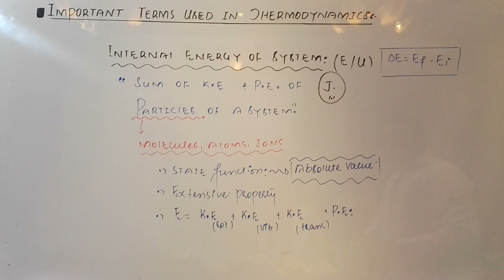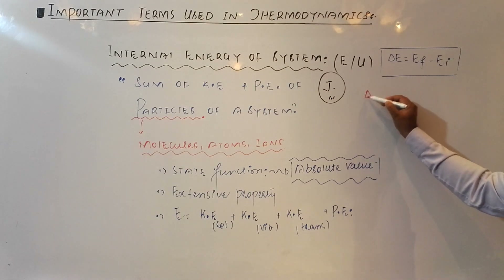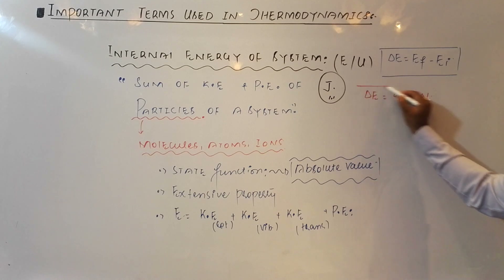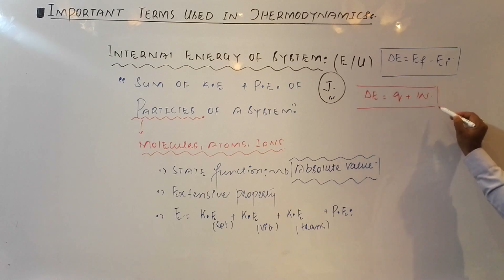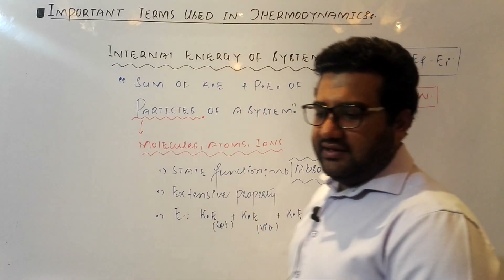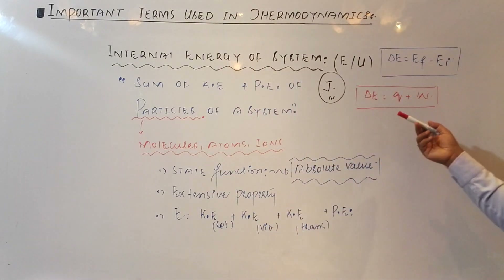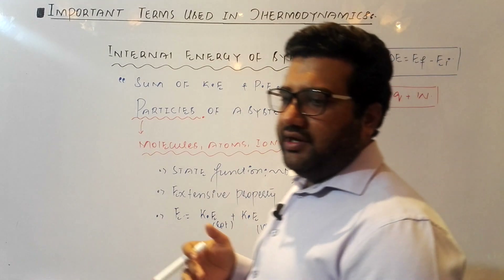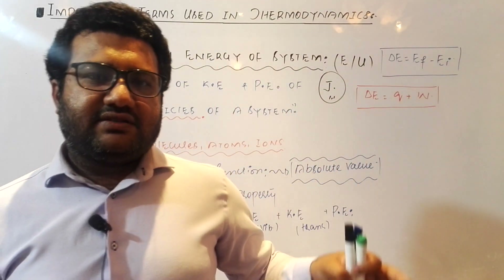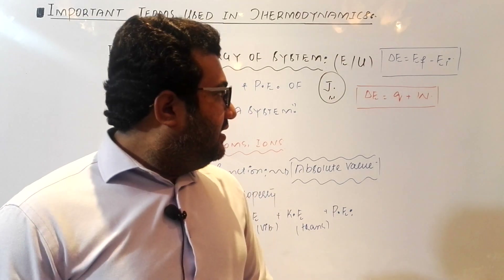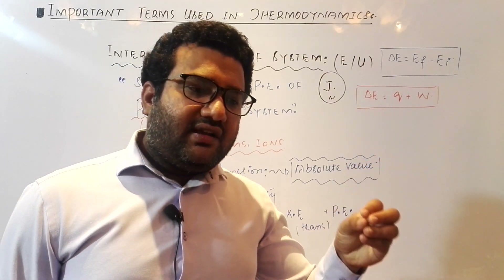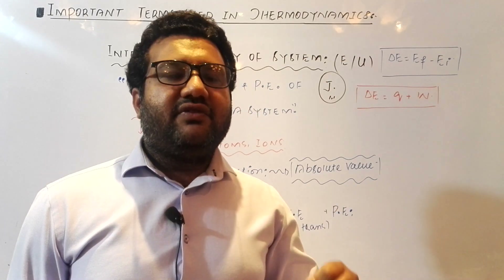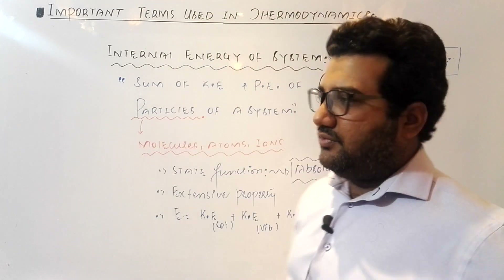The change in internal energy is calculated using the first law of thermodynamics. At this point, you only need to remember that the change in internal energy equals heat Q plus work W. This is the first law of thermodynamics, and the concept of change in internal energy was established by this law.